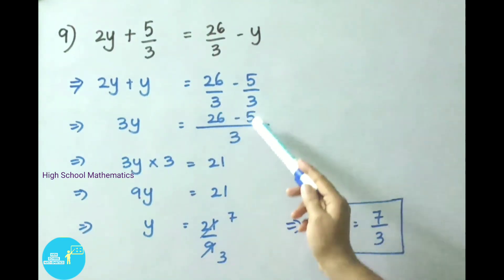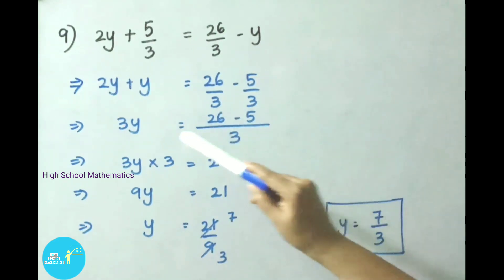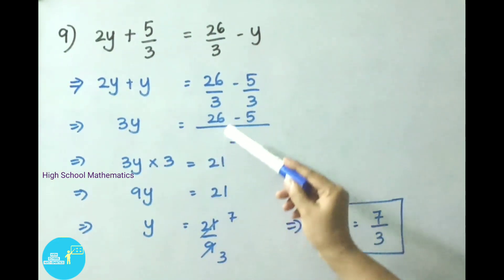Here denominators were same. So write the LCM value 3. Now write down the numerator and do the subtraction. See here 3 is going to divide, on transposing it becomes multiplied. So 3y into 3, that equals 26 minus 5, that is 21.